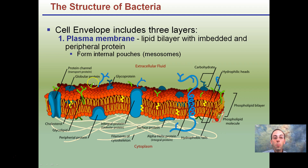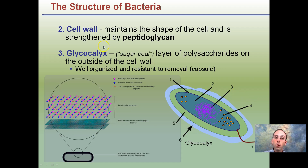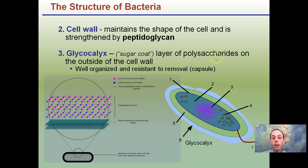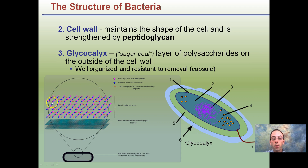The plasma membrane also facilitates the removal of waste products. There's also a cell wall that maintains the shape of the cell, made of peptidoglycan and the glycocalyx — basically a sugar coat. 'Glyco' refers to glucose and 'calyx' to coat. This is a layer of polysaccharides on the outer portion of the cell wall, resisting removal. A separate video on gram staining will cover more of this.